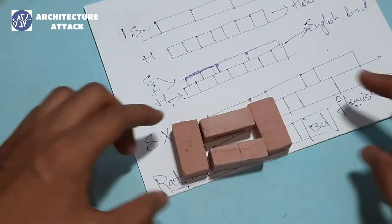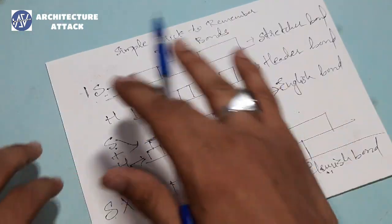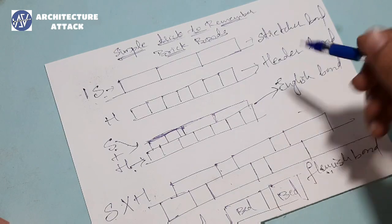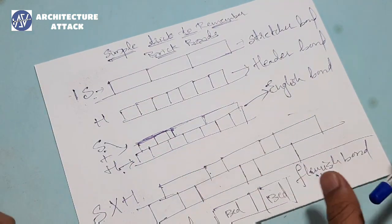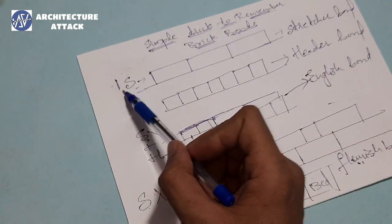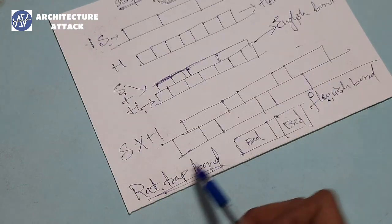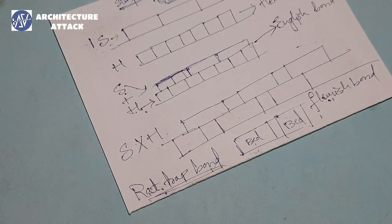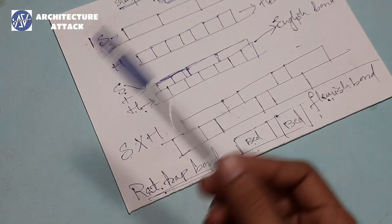So it's a simple trick — this is how I remember all these bonds. To recap: stretcher in elevation is stretcher bond, header in elevation is header bond, stretcher plus header is English bond, stretcher into header is Flemish bond, and if you are seeing beds in elevation — same pattern as Flemish bond — then it's rat trap bond. I hope you got it. Follow on Instagram. Take care, bye bye.